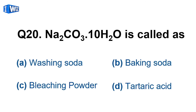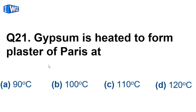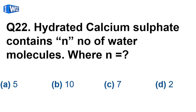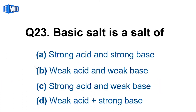Question number 20: sodium carbonate with 10 water molecules of crystallization is called washing soda. Question number 21: gypsum is heated to form plaster of paris at 100°C — this is your NCERT line. Question number 22: hydrated calcium sulfate is CaSO₄·2H₂O, so the value of n is 2.